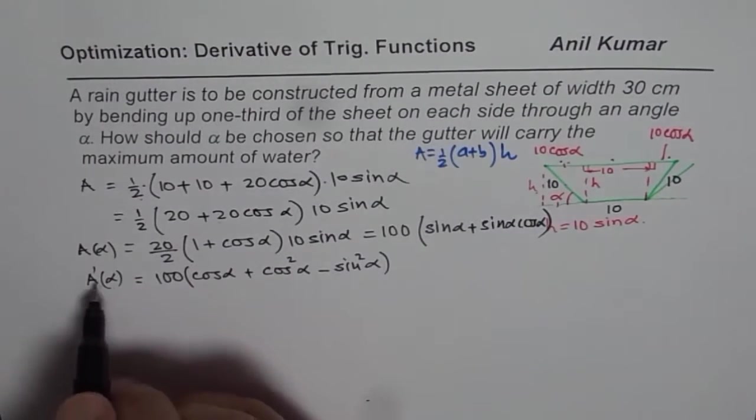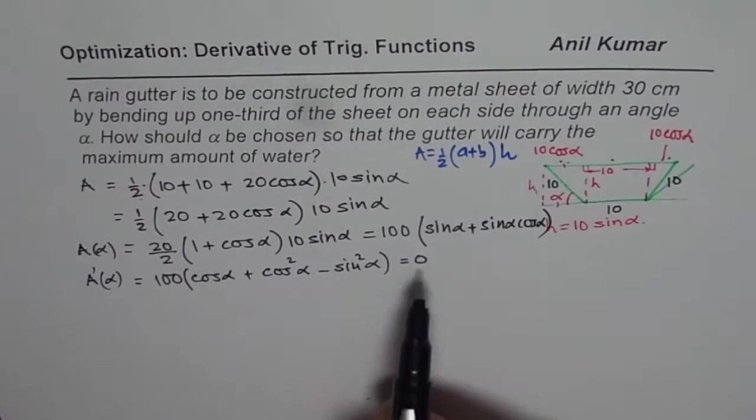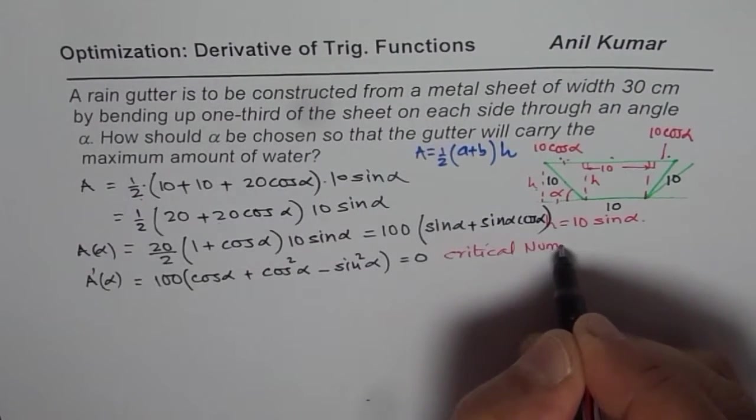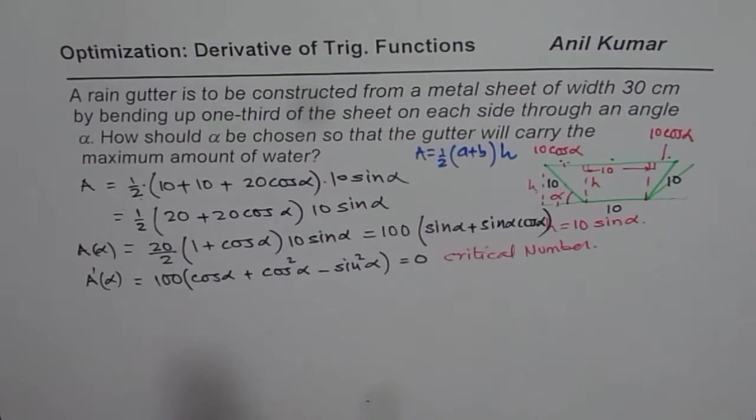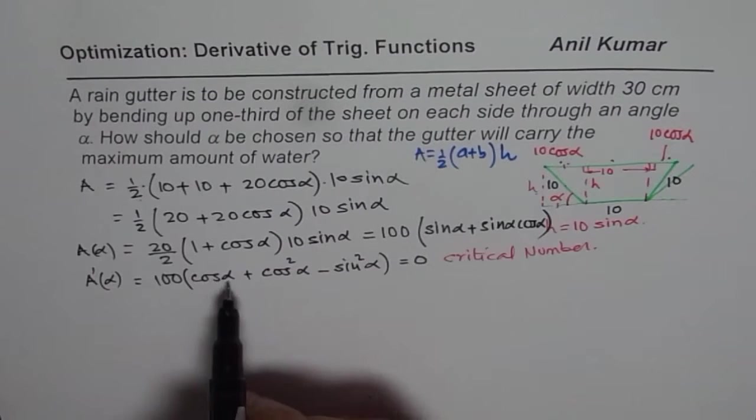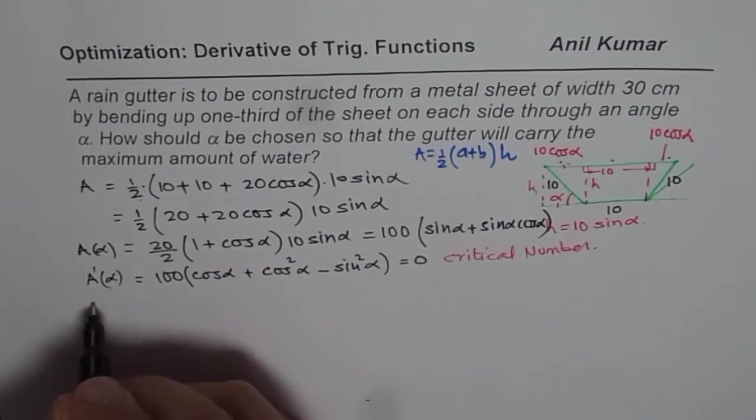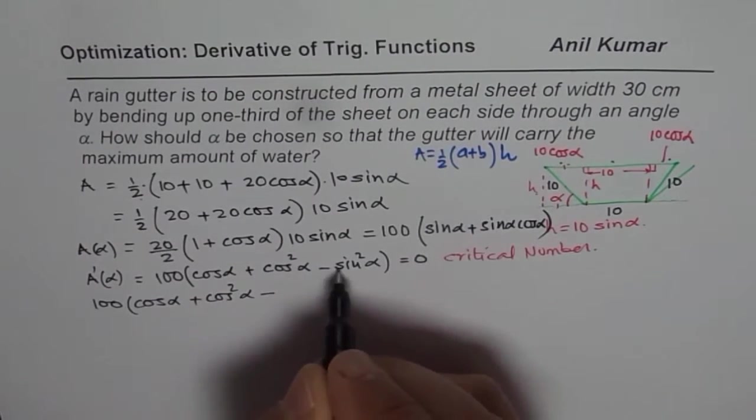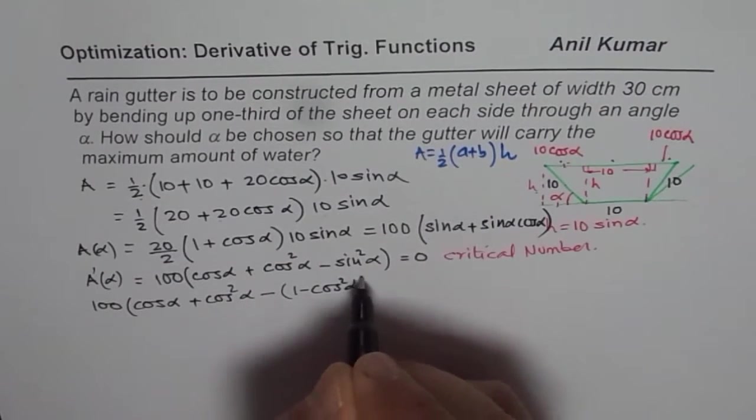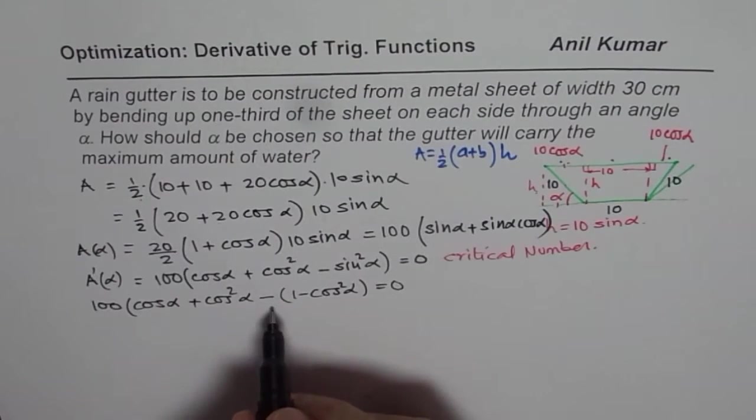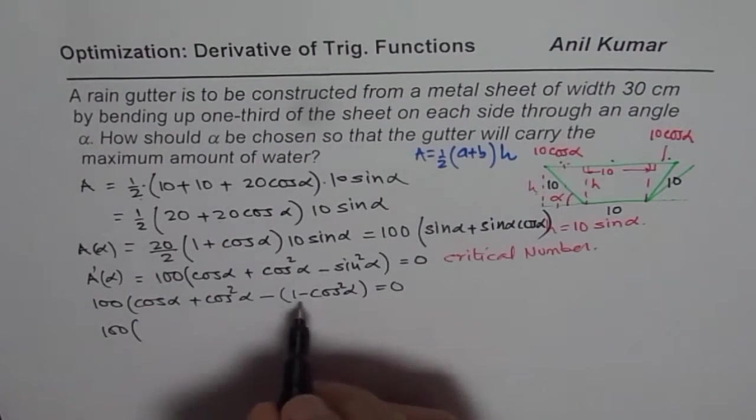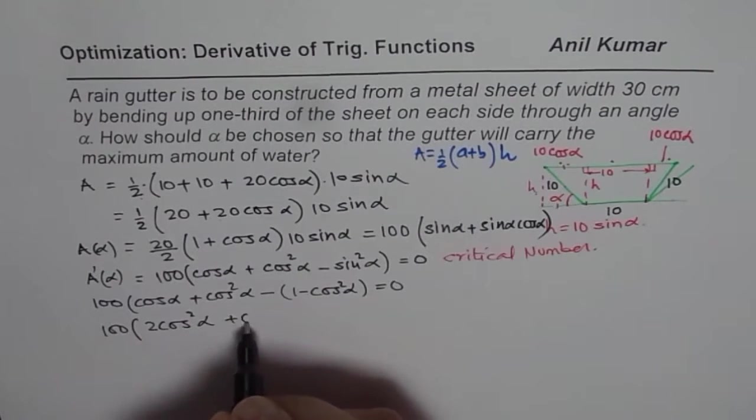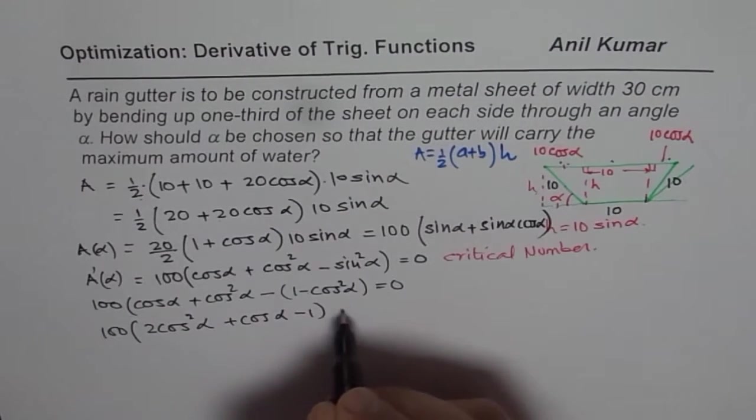To find the critical number, this derivative should be equal to 0. Let's equate it to 0. We can write sin square alpha as 1 minus cos square alpha, so that you have quadratic equation in cos square alpha. We get 100 times cos alpha plus cos square alpha minus 1 minus cos square alpha equals 0.